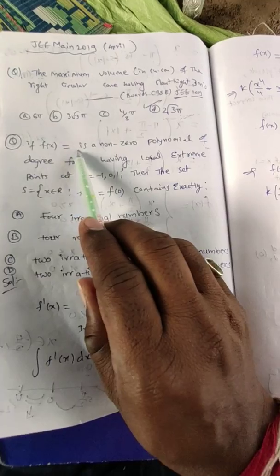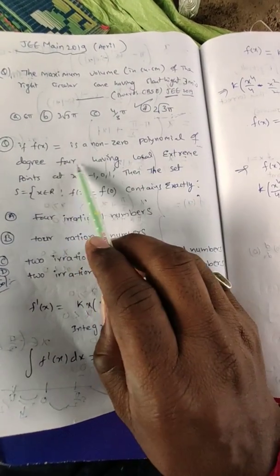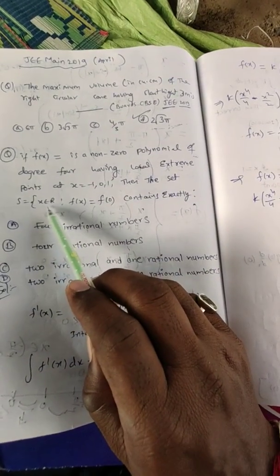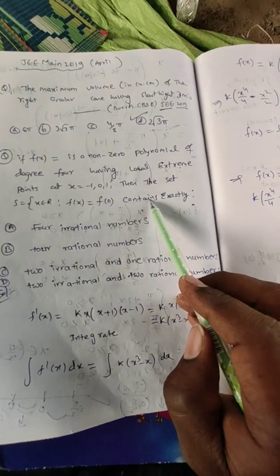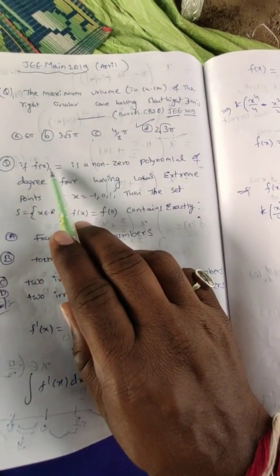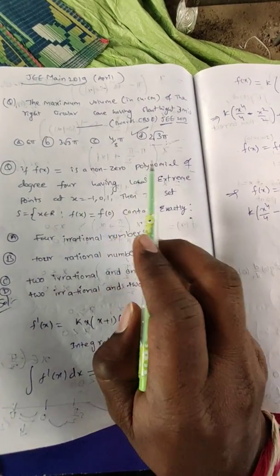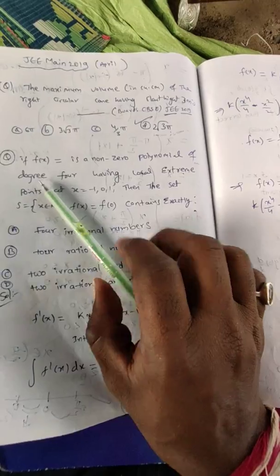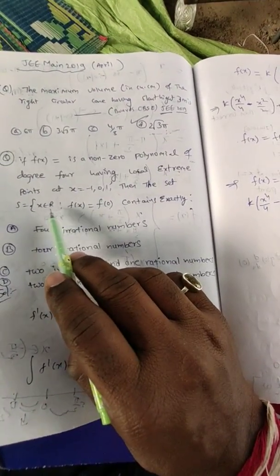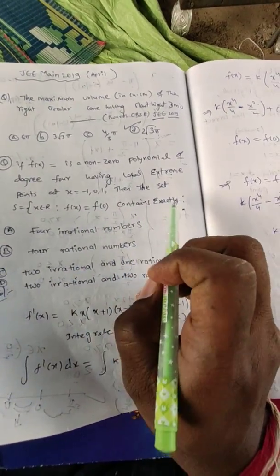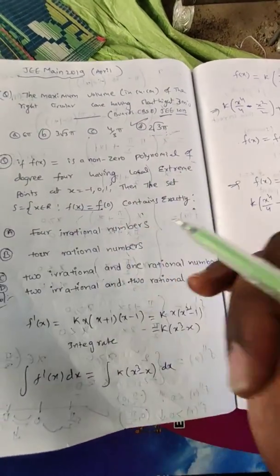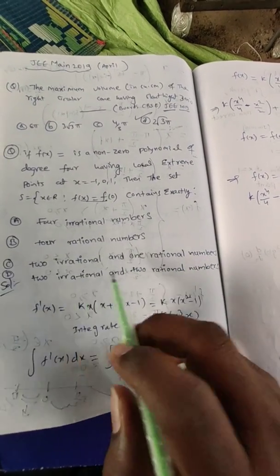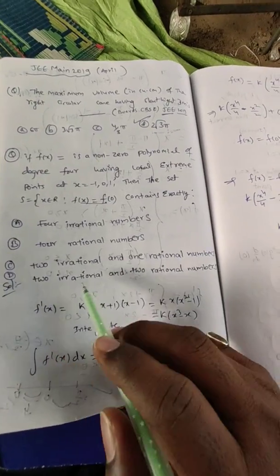Let us go to the next question. f(x) is a non-zero polynomial of degree 4 having local extreme points at x = -1, 0, and 1. Then the set S = {x ∈ ℝ : f(x) = f(0)} contains exactly — the options are: 4 irrational numbers, 4 rational numbers, 2 rational and 1 irrational, or 2 irrational and 2 rational.